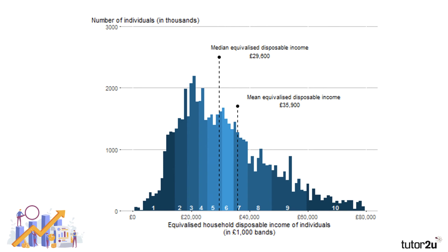Here are the figures for the UK. You can see the distribution of what's called equivalised disposable income — they make a small adjustment for household size, since a family of five or six people needs a higher income than someone living alone. That's what 'equivalised' means. You can see that the distribution on this chart is skewed towards lower income groups on the left-hand side, which is why mean income is over £6,000 larger than median income in the UK. People on high incomes drag up the mean, making it significantly higher than the median.